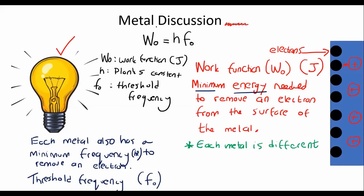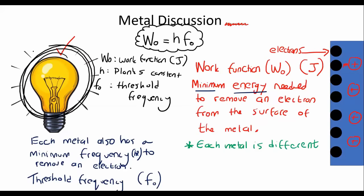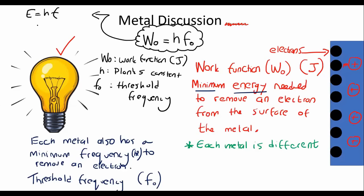This formula is very similar to the formula that we looked at when we were looking at the light. That one went E equals hf. But it was still energy and it was still frequency. That is exactly the same here. We've still got energy and we've still got frequency. The only difference is that the one is for the metal and the one is for the light.